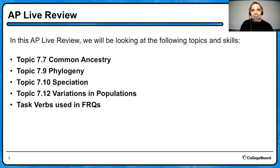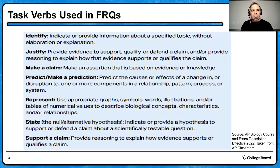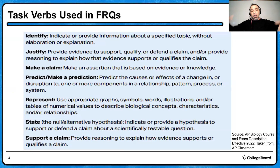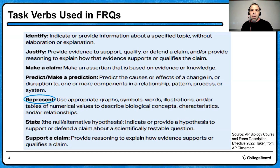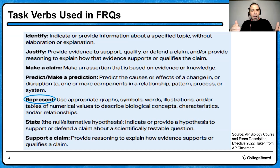Let's talk more about natural selection, specifically common ancestry and speciation. In my previous video I talked about the first four task verbs; now we're going to talk about the last three. 'Represent' — you're going to use a graph, a symbol, a word, an illustration, a table, or a numerical value to describe a concept, a characteristic, or a relationship.